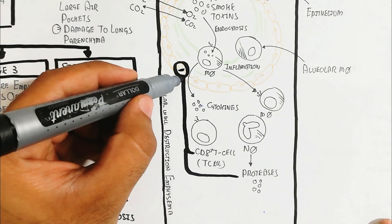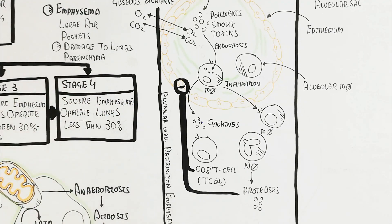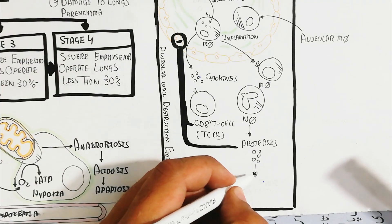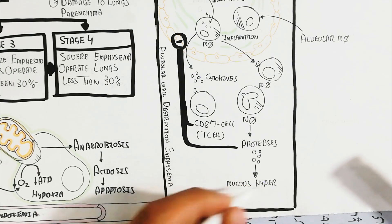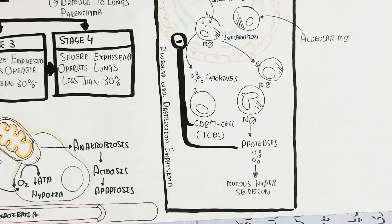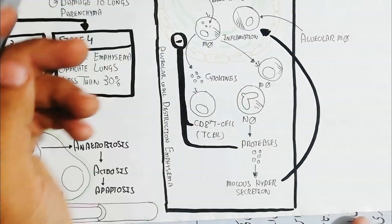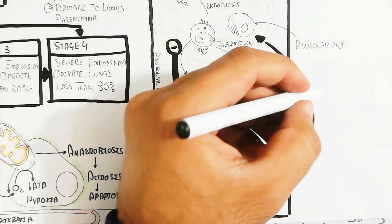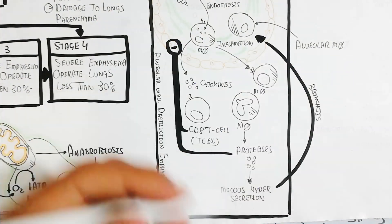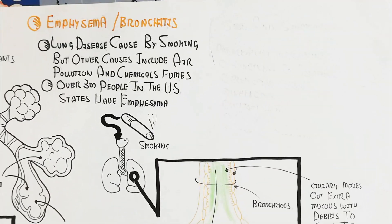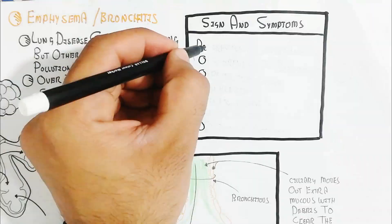Neutrophils produce proteases that cause mucus hypersecretion, leading to bronchitis. Alveolar wall destruction is known as emphysema.